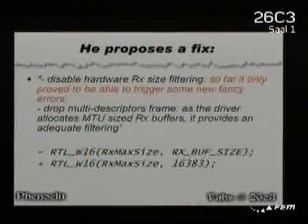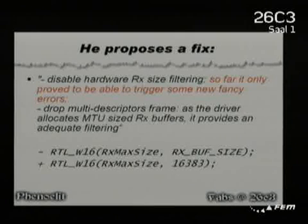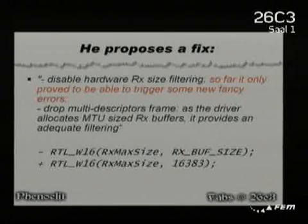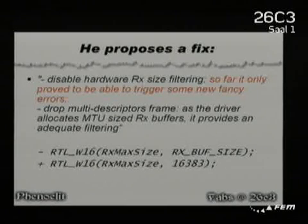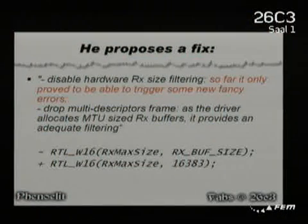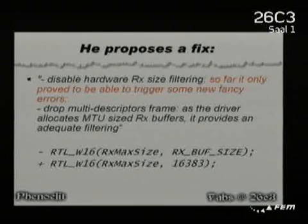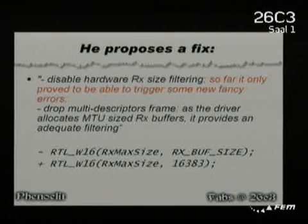He proposes a patch. First, he would like to disable hardware filtering because so far it only proved to trigger some new fancy errors. Second, drop all multi-descriptor frames — anything in more than one buffer, just drop it. So the change is: instead of saying the maximum size you may receive is RX buff size, which enables hardware filtering, just tell it to receive anything — disable hardware filtering.